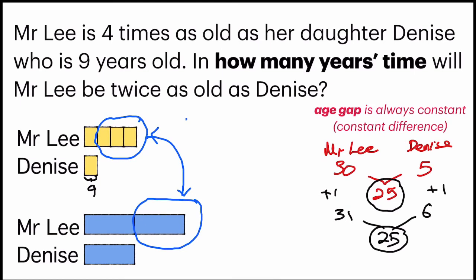So in the first part, it's 9 times 3. I get 27, which is equal to these 3 units of yellow blocks. And then these 3 units of yellow blocks is equal to this 1 unit of blue block, which is Mr. Lee's and Dennis' age gap. So this is 27, and Dennis would be 27 years old as well.